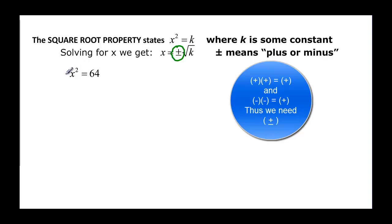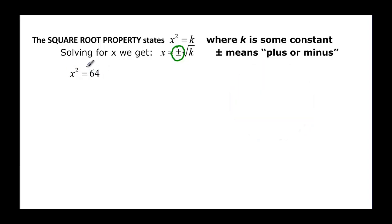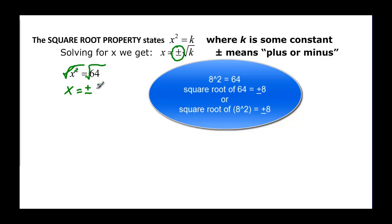So we have x squared equals 64 — a constant on one side equal to x squared on the other. We can take the square root of both sides. The square and the square root cancel each other out, giving us x equal to plus or minus the square root of 64. Since 8 squared is 64, the answer is plus or minus 8.